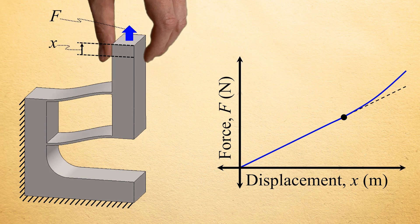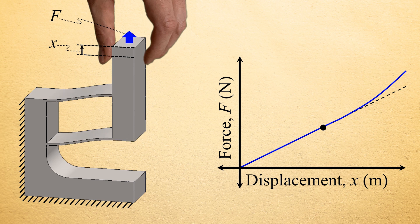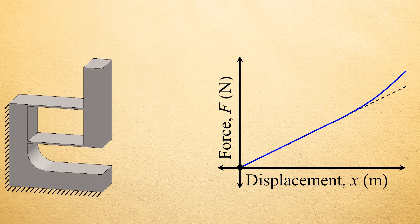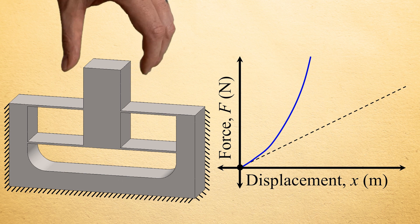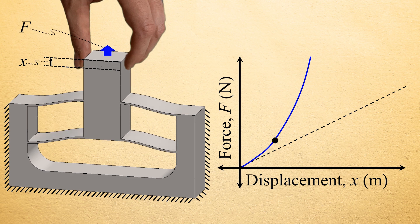Even this spring, which is typically considered linear, begins to appreciably stiffen when it is deformed significant amounts compared with the size of its blade flexures. Some springs, however, like this example, stiffen immediately and dramatically when they are deformed even small amounts compared with their overall size.